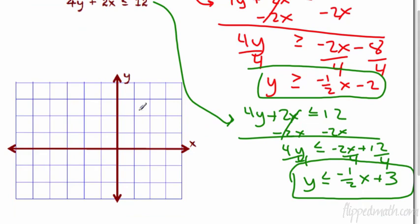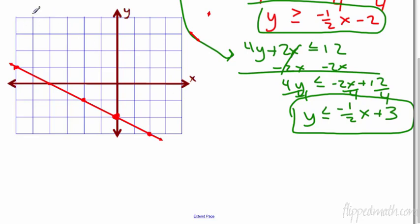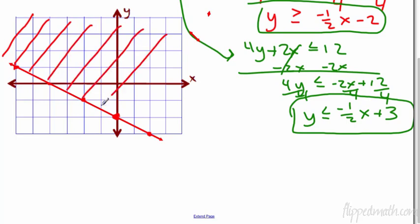I'm going to graph this as I would on paper. Starting at negative 2, go down 1 over 2. A couple of points make a nice straight line. It's a solid line since it's greater than or equal to. Use a ruler because a ruler makes it nice and straight. Greater than or equal to means we shade above — this is my shading part here.